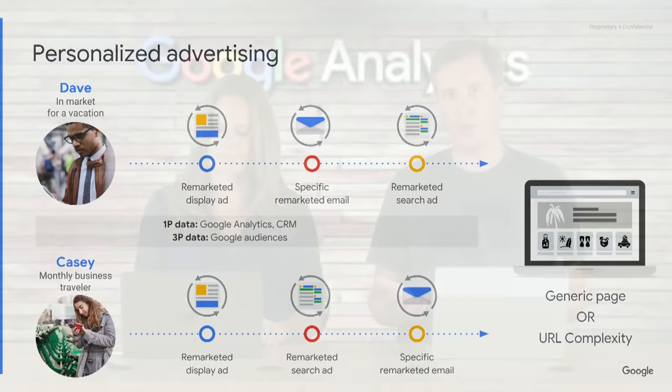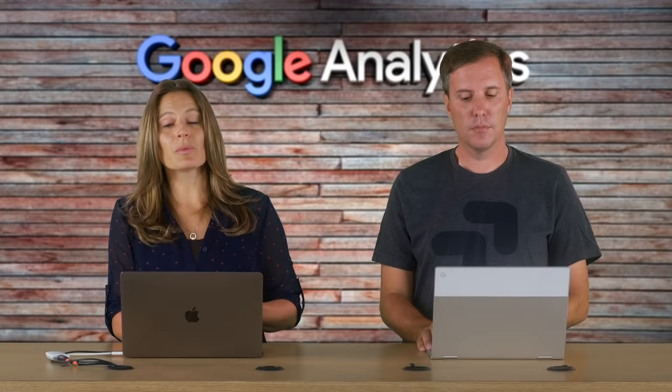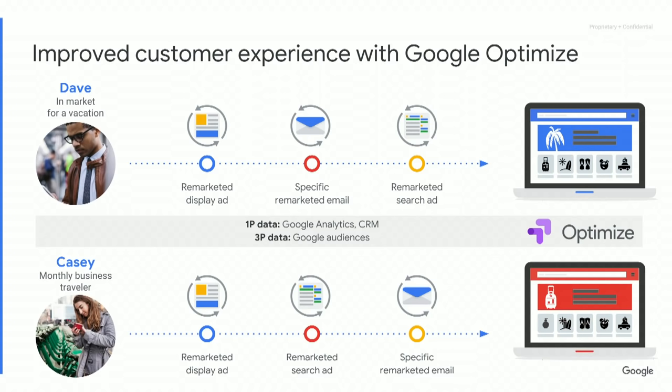The marketing funnel has changed dramatically, especially with the rise of mobile. You don't have an easy process where someone goes A-B-C to a destination — they could have a hundred different touch points before making a buying decision. Between Casey and Dave, they had two different experiences before they even got to your website the first time. What we want to do is give them an improved customer experience, and we can do that with Google Optimize — landing them on an appropriate landing page based on the personalized ad campaigns they've already seen.